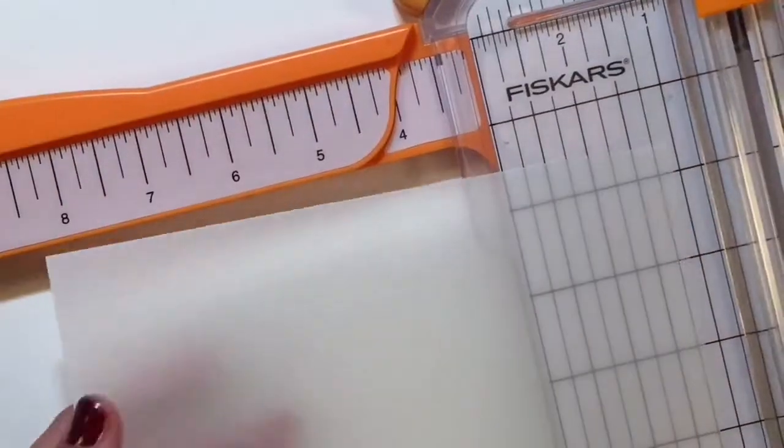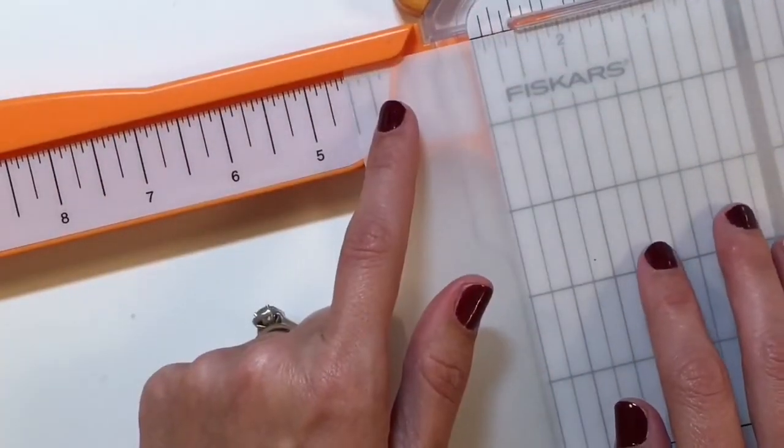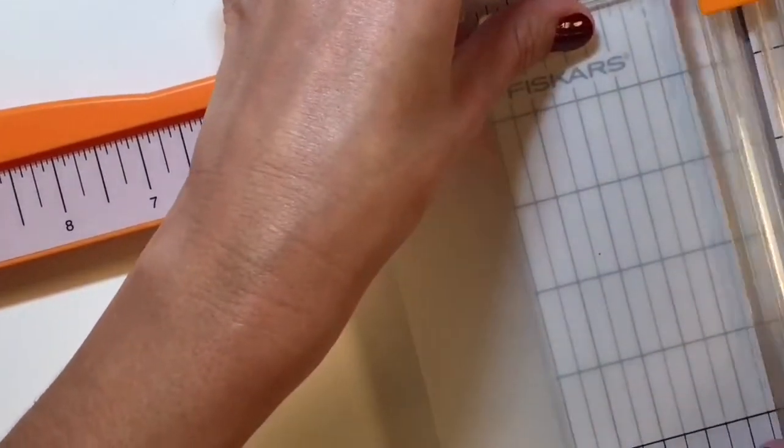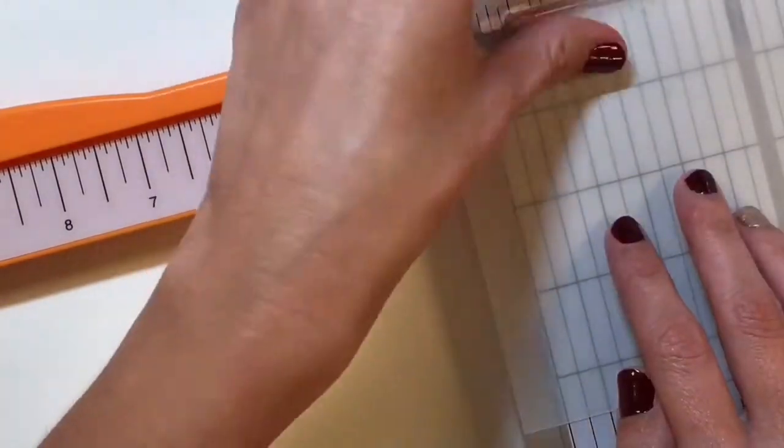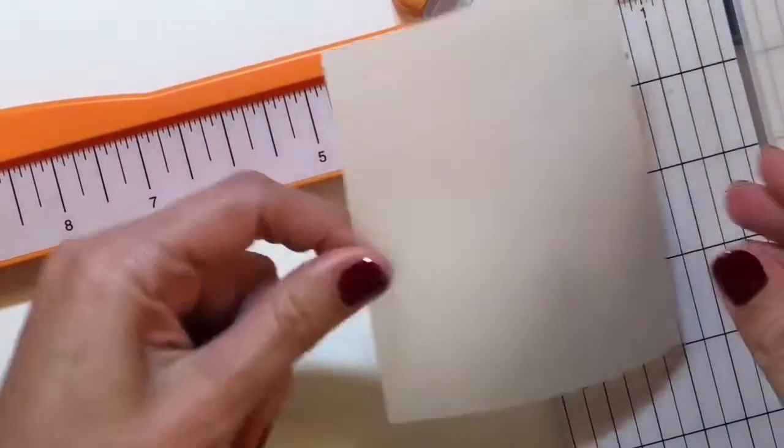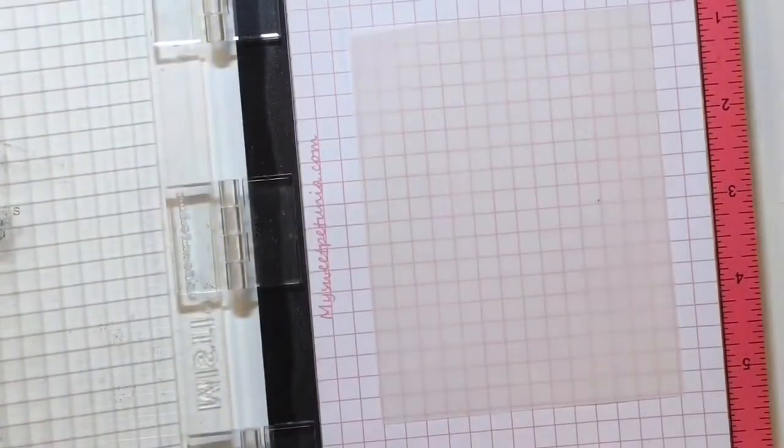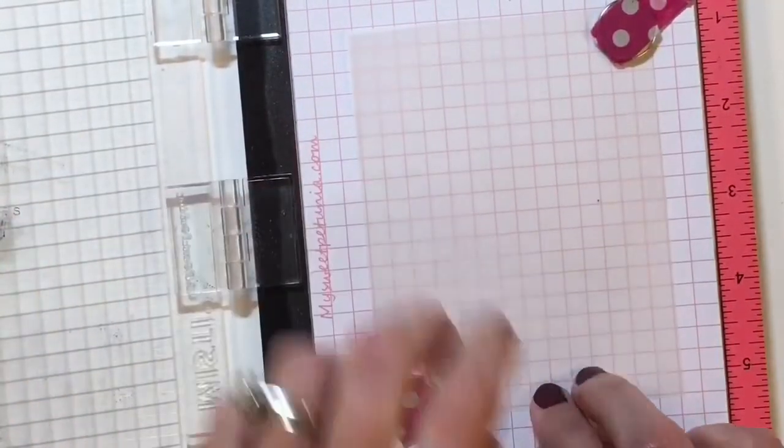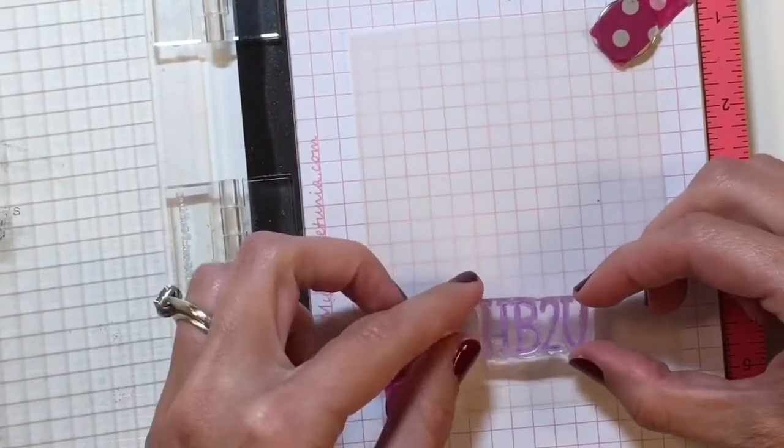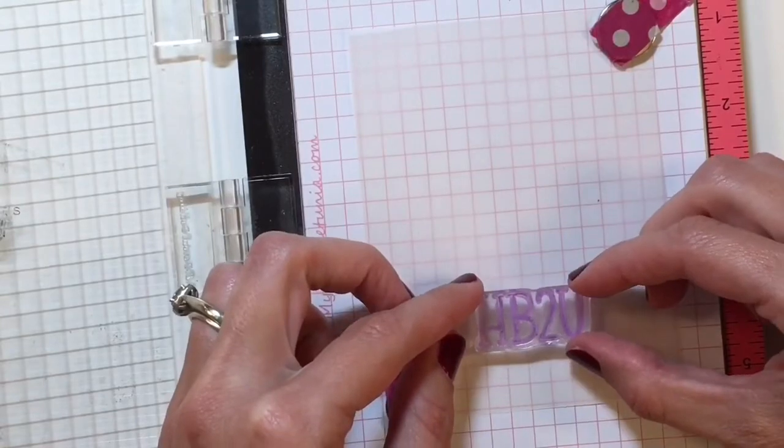I'm almost done coloring in this little cake piece here. I'm going to move on to cutting some vellum. Vellum is just a clear, kind of frosty looking paper. It adds detail and makes your card look pretty. It also pushes that background back so that it doesn't overtake the focal point of the card.